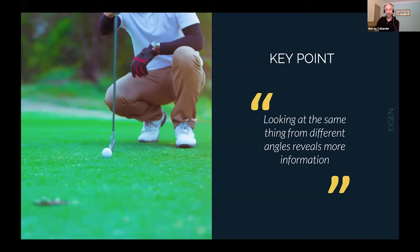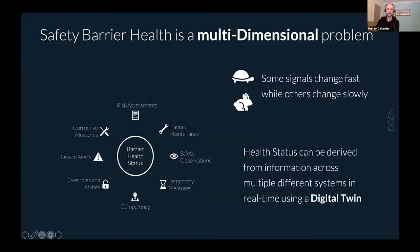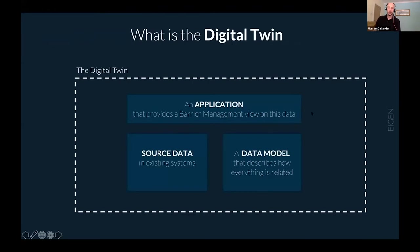What's different about the digital twin approach? The digital twin lets you view the problem from multiple angles. There's a saying in golf: when you're putting, you should always look at the putt from both angles because the green can look different from another viewpoint. That's exactly what we see with monitoring safety barrier health. Safety barrier health can be affected by slow-moving signals like planned maintenance or personnel competency, but also by fast-moving signals like device alerts. The status information comes from aggregating all these sources against business rules to give you a picture of your safety barriers' real health.